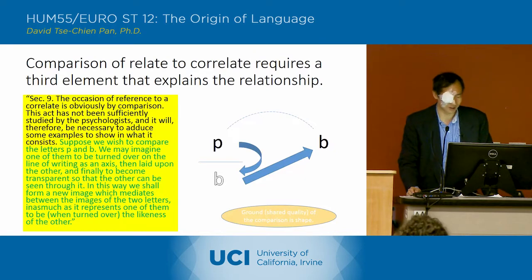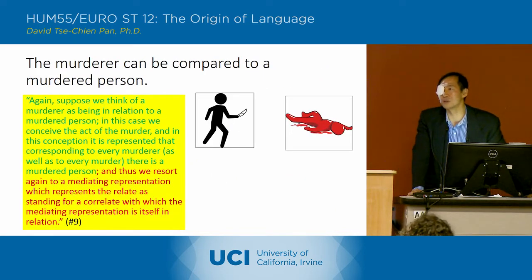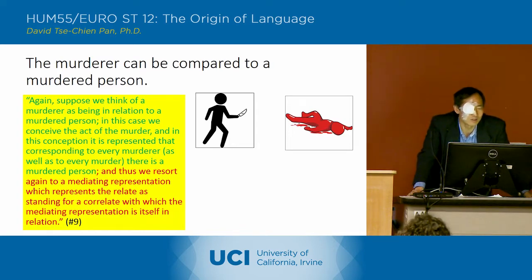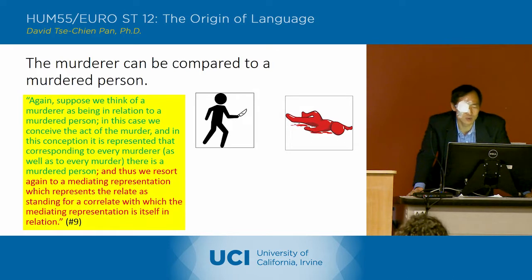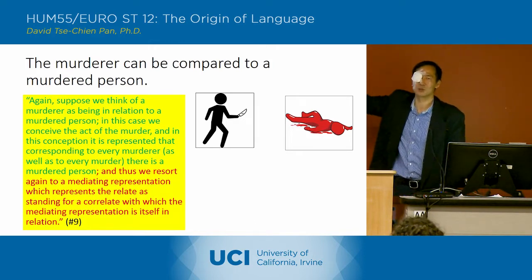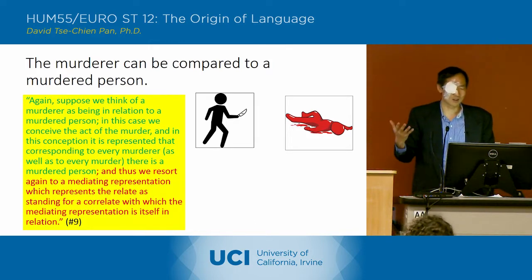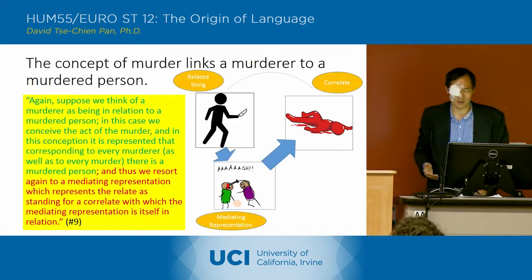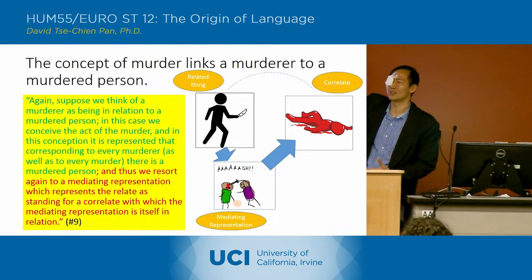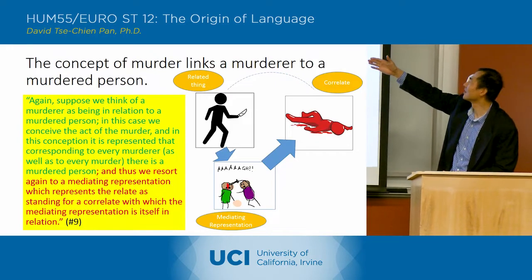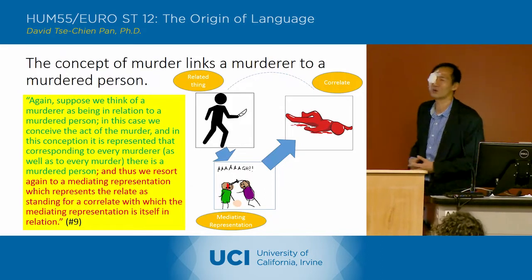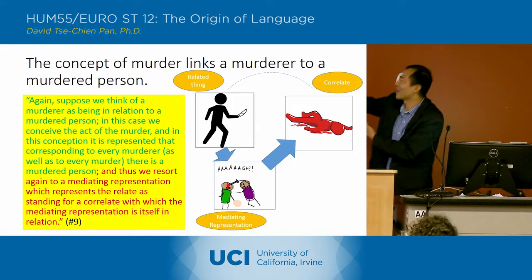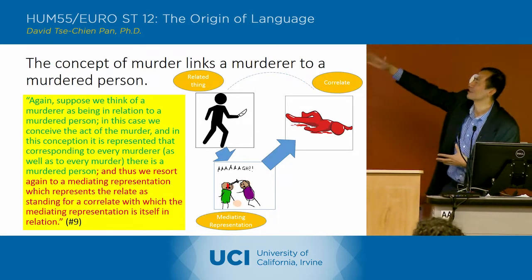The second example: a murderer can be compared to a murdered person. He says: 'Suppose we think of a murderer as being in relation to a murdered person. In this case, we've conceived the act of the murderer, and in this conception it is represented that corresponding to every murderer as well as to every murder, there is a murdered person.' So we've got the murderer and the murdered person — and the mediating conception is the murder itself. That conception of murder is the mediating representation between the murderer and the murdered person. Without that mediating representation, we don't understand that there's a relationship.